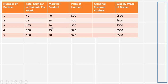Here's our table. The first thing is to calculate marginal product, which is just the change in output from hiring one more worker. With no barbers, we produce no haircuts. When we hire the first barber, haircuts per week is 40 — that's the marginal product of the first barber. Hiring a second barber increases haircuts by 75 minus 40, or 35 additional haircuts per week. Hiring the third worker increases haircuts by 30 — we go from 75 to 105.